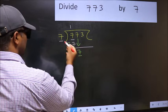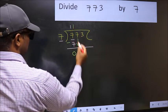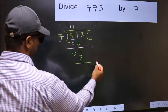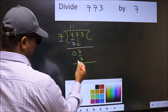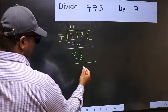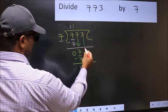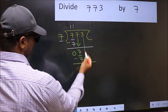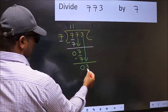Now 7, when do we get 7 in 7 table? 7 once, 7. Now you should subtract. 7-7, 0. After this, bring down the beside number. So 3 down.